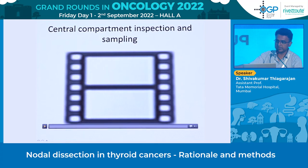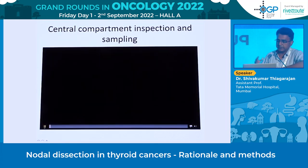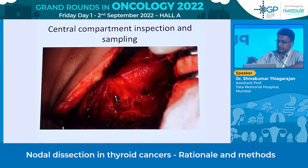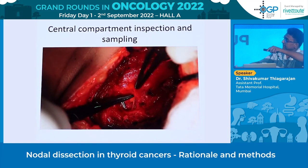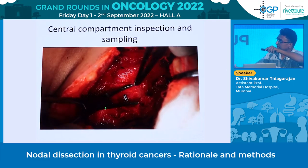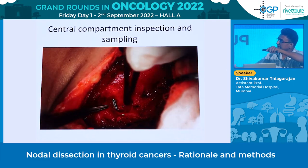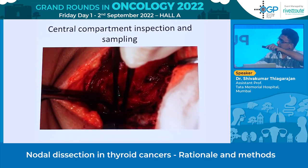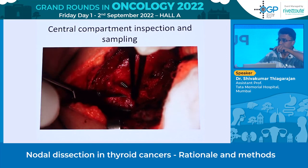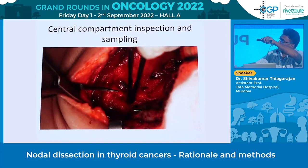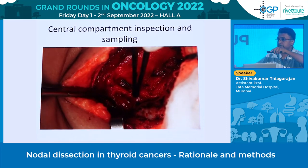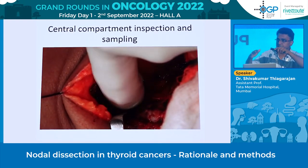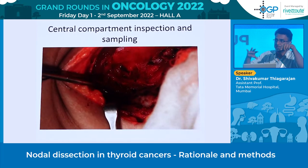Here is a video demonstrating central compartment inspection after total thyroidectomy. This is the head end, foot end, and right central compartment. The recurrent laryngeal nerve is visible, with the common carotid area, the trachea, and both superior and inferior aspects of the central compartment. We open the fascia on the nerve and dissect the soft tissue to identify any suspicious nodes.